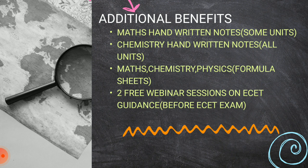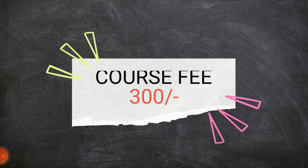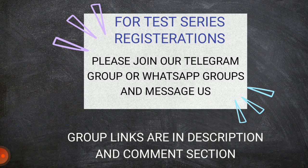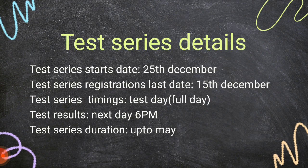Maths, chemistry, handwritten notes, maths, physics, chemistry, formula sheets — and two free webinar sessions. This time you have only a course fee of 300 rupees. If you register via the link in the description, you will find our Telegram channel and WhatsApp. If you have any questions, you can join and register, or send a message to the group admin.